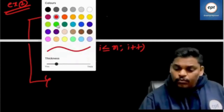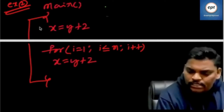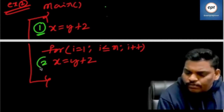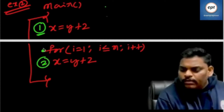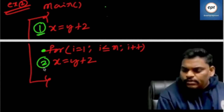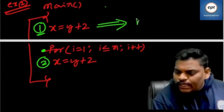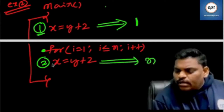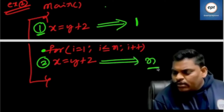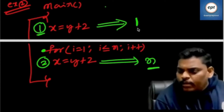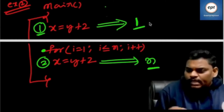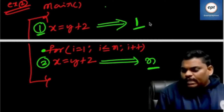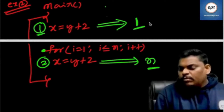What is the time complexity of this program? This program contains two statements. For loop is not a statement. While running, the first statement will execute one time — that is its order of magnitude. While running, the second statement will execute N times — that is its order of magnitude. Second statement order of magnitude is N; first statement order of magnitude is 1.